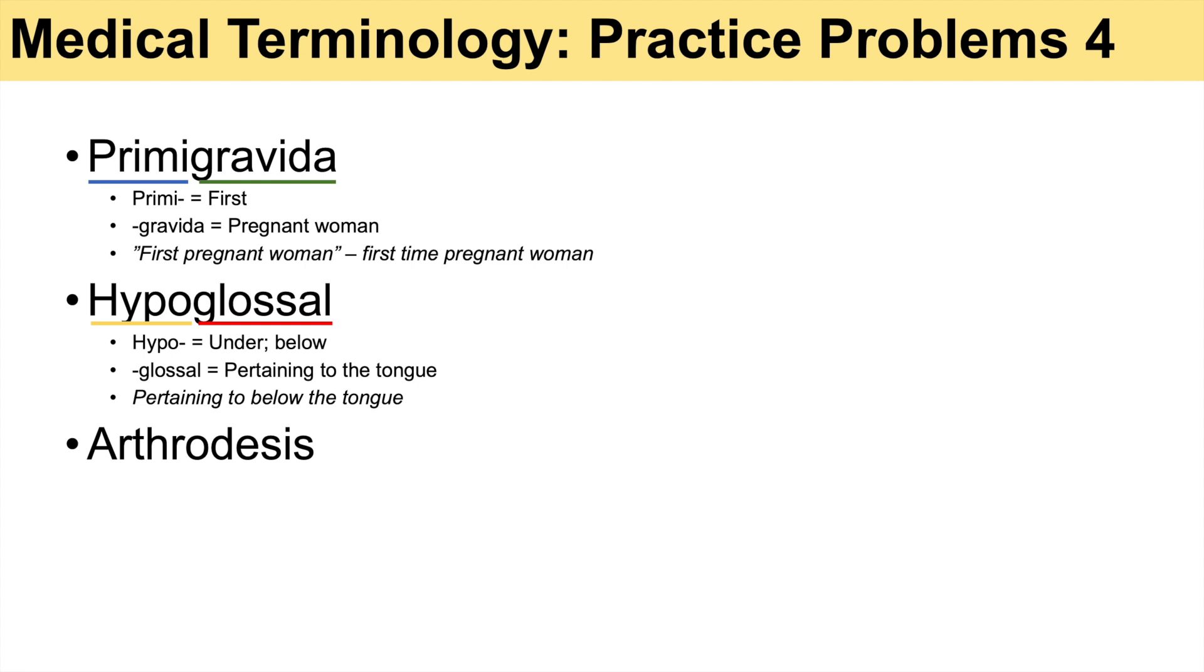The next word is arthrodesis. Arthro means joint, and desis means to bind. Arthrodesis is a procedure to bind a joint, which really means a procedure to immobilize a joint by fusion of adjacent bones.